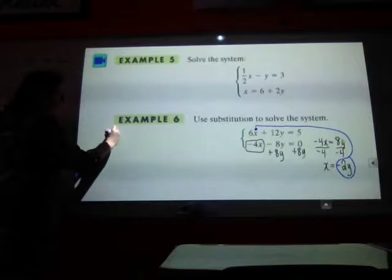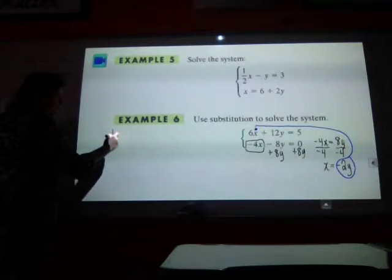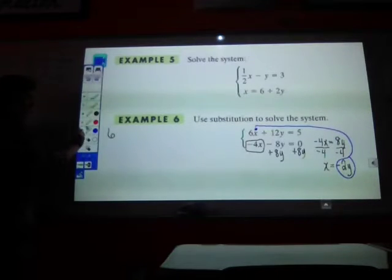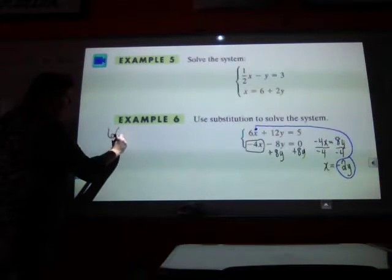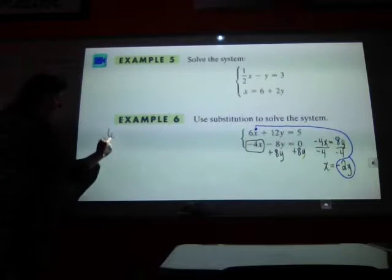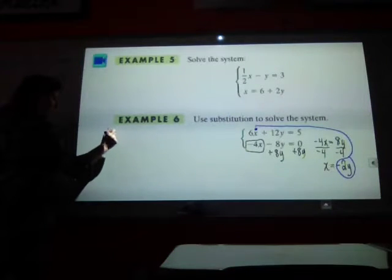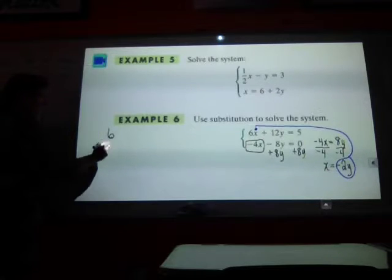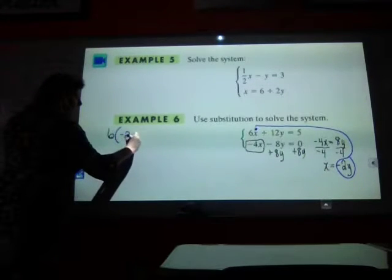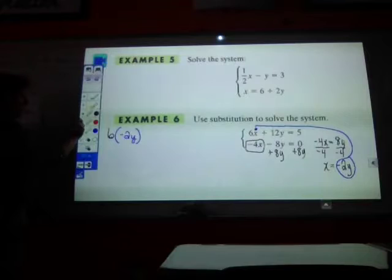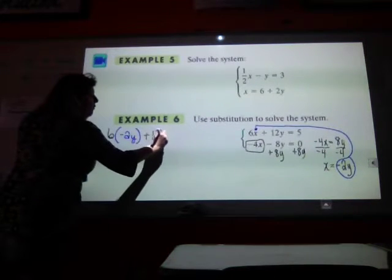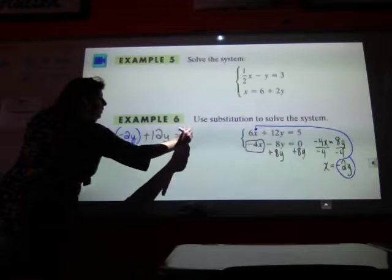Let's go 6 times negative 2y. So that's going to get me negative 2y times negative 2y times negative 2y. Plus 12y is going to be equal to 5.